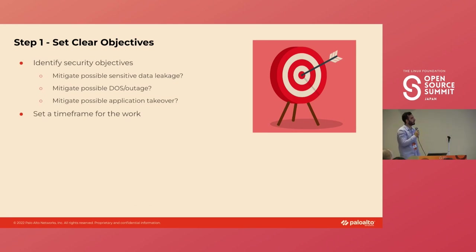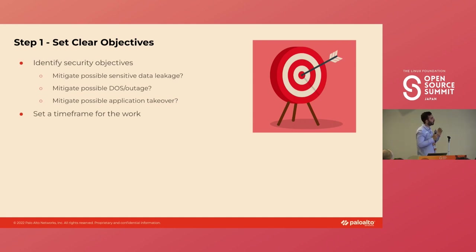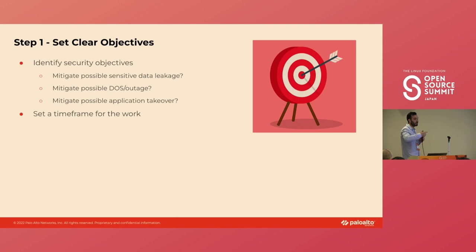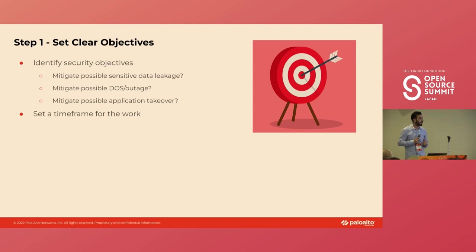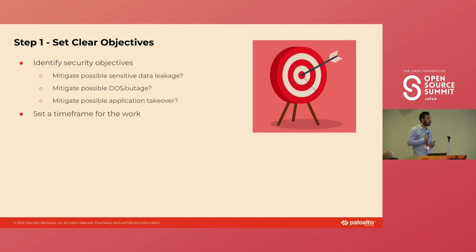Now let's talk about how to practically do threat modeling. These slides will be general and abstract but give you a first push. This is especially for developers, maintainers, architects, or anyone involved in applications. The first step is to set clear objectives — decide what you want to identify as a security issue. For example, if I'm a bank, my biggest concern is sensitive data leakage, so my objective will be to find and mitigate possible sensitive data leakage vulnerabilities. If I'm a real-time application, my focus would be on DoS, outages, or anything that could crash my application.